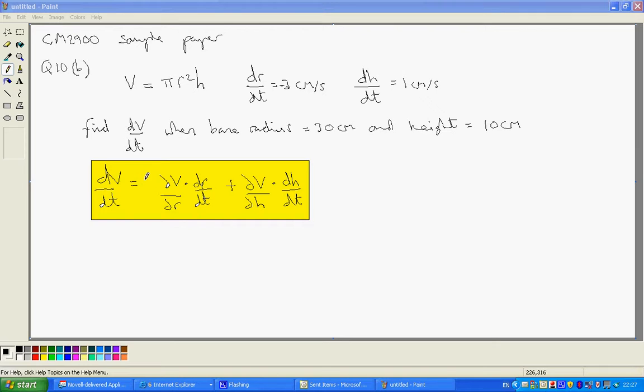So, we have this method here for finding dV by dt. We need the partial derivatives partial V by R, which is going to be, well, pi H is just a constant. So pi H times derivative of R squared is 2R.